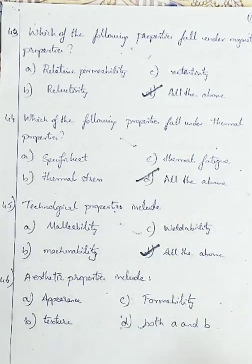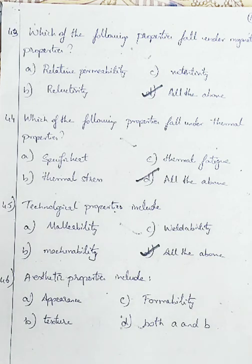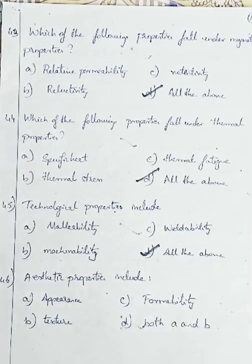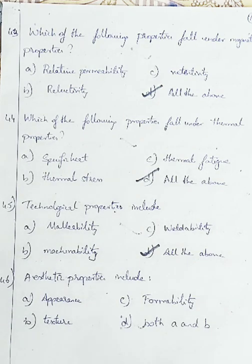Question number 46: aesthetic properties include — Option A: appearance, Option B: texture, Option C: formability, Option D: both A and B. Appearance and texture come under aesthetic properties as they relate to how the material looks. Formability does not come under looks. So we are going with Option D, both A and B.